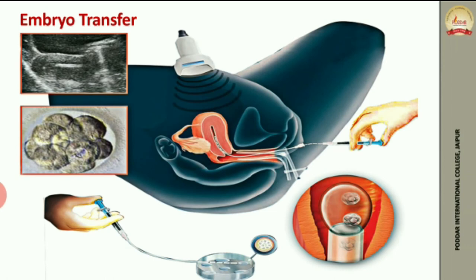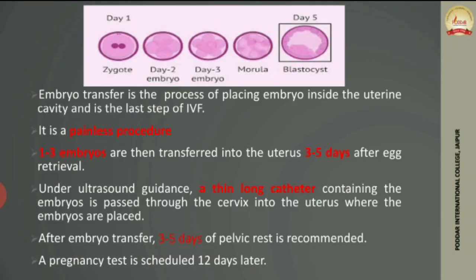After embryo culture, the embryo is transferred to the mother's uterus — this is called embryo transfer and is the last step of IVF. Although it is not painful, care must be taken. A long catheter is used to place the embryo into the uterus under ultrasound guidance. After the procedure, 3 to 5 days of rest are recommended, and a pregnancy test is scheduled 12 days later to determine if IVF was successful. If not, the whole process can be repeated after 6 months.